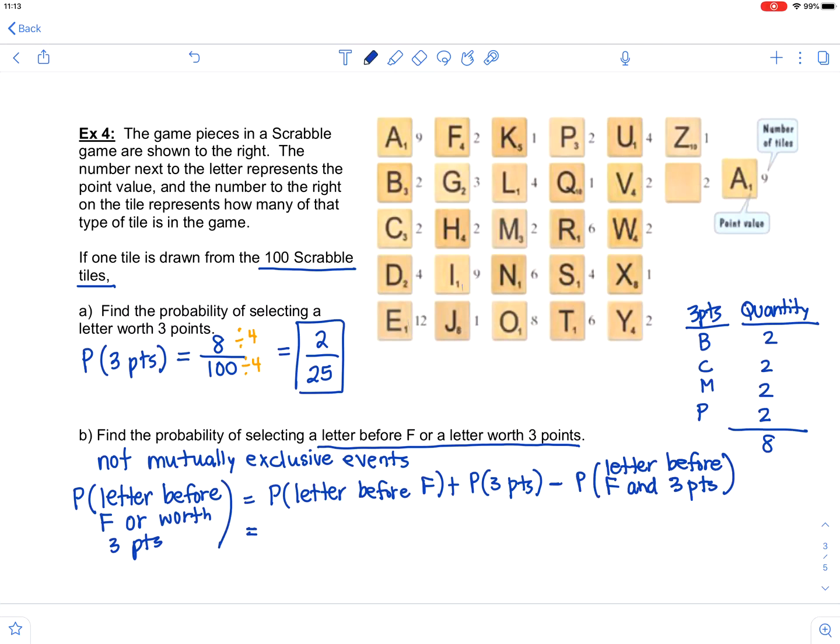So let's look at each of these. If we look at our letters before F, that is this first column here. A, B, C, D, and E. We're not focusing on the point value right now. We're focusing on what is before the letter F. So if we add all of these together, the quantities, nine plus two, plus two, plus four, plus 12, that total is 29. So there's 29 tiles with letters from A, B, C, D, and E. So the probability of getting a letter before F is 29 out of 100.